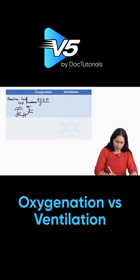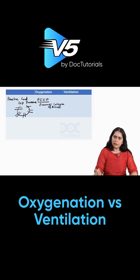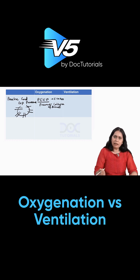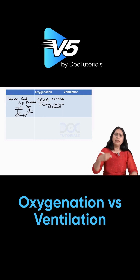PEEP prevents collapse of alveoli. We give the patient a minimum PEEP of 5 centimeters of water, and if required, we go on increasing it until the target oxygenation is achieved.